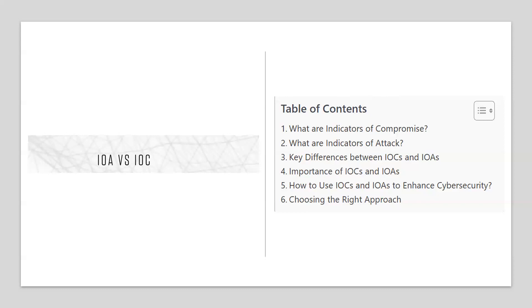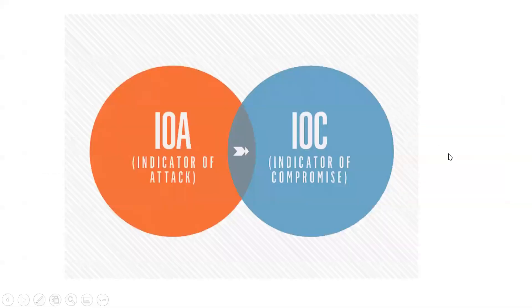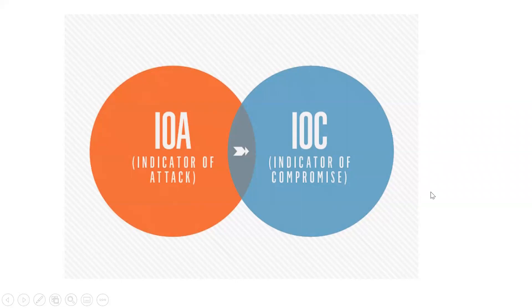Let's get started. Before starting, I just want to explain the full forms: IOA means Indicator of Attack, and IOC means Indicator of Compromise.